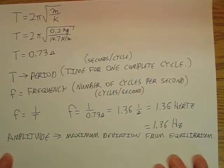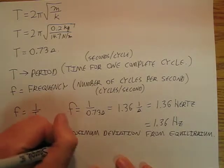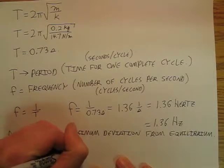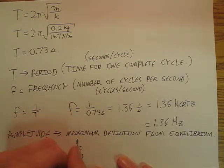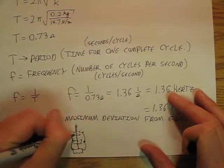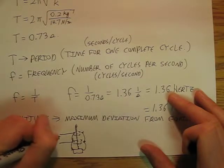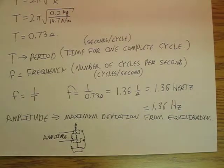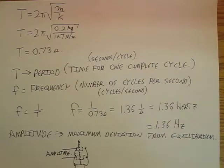Amplitude is the maximum deviation from equilibrium. I chose those words to relate to more than just springs and masses — to sound waves and other things like that. Basically, if I've got a spring with a mass, it's going boing, speeding up to here, slowing down to there, going back and forth. That distance — that's my amplitude. In the next video, we're going to come back and talk about pendula.